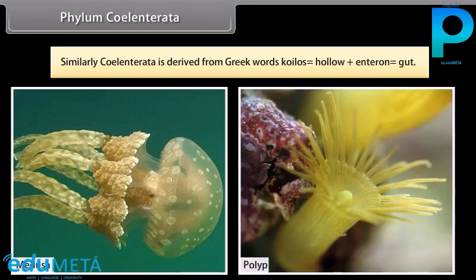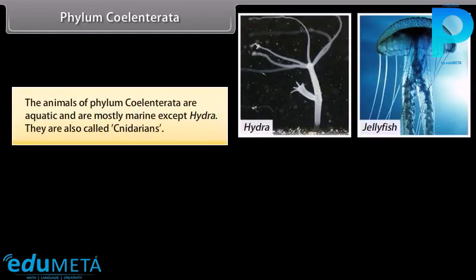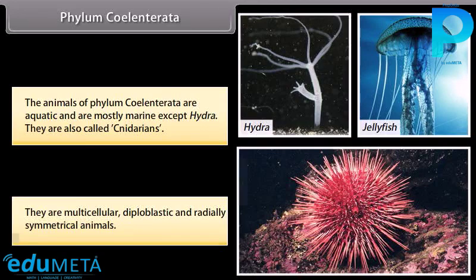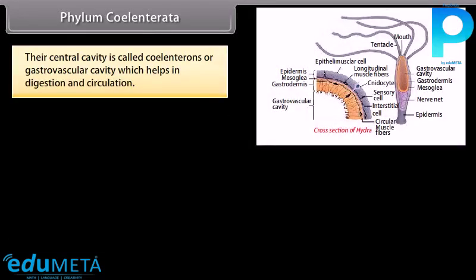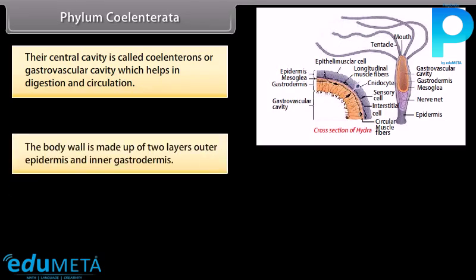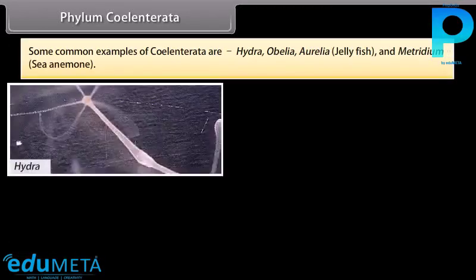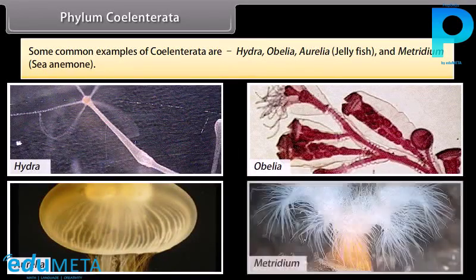Phylum Coelentrata is derived from Greek words koilos, meaning hollow, plus enteron, meaning gut. The animals of Phylum Coelentrata are aquatic and mostly marine except Hydra. They are also called cnidarians. They are multicellular, diploblastic, and radially symmetrical. Their central cavity is called coelenteron or gastrovascular cavity, which helps in digestion and circulation. The body wall is made up of two layers: outer epidermis and inner gastrodermis. Most are colonial while some, like Hydra, have solitary life. Common examples are Hydra, Obelia, Aurelia, jellyfish, and Metridium (sea anemone).